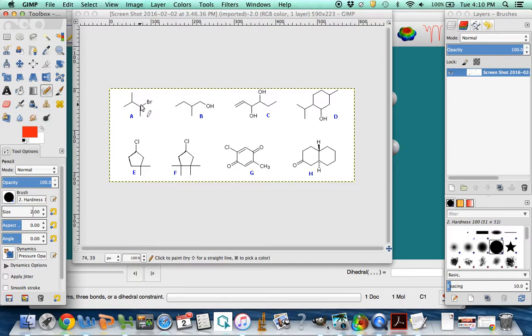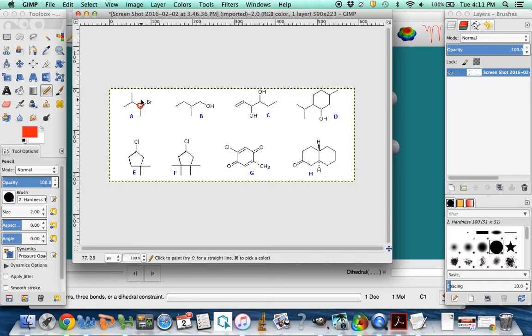This one is chiral. This carbon is the only chiral carbon in this molecule. It has a bromine, methyl, hydrogen, and then really this isopropyl group attached to it. That's the chiral carbon in that molecule.